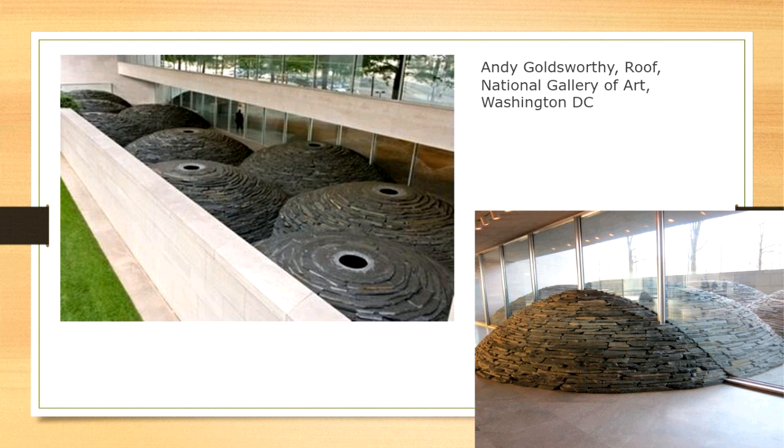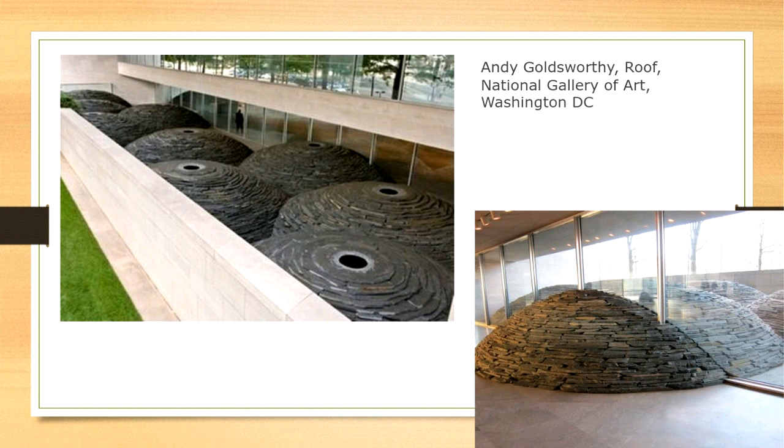This is Andy Goldsworthy's roof sculpture, which is actually right downtown at the National Gallery of Art. The cool thing about that sculpture is that when you walk into the gallery, some of it seems to be on the inside of the building and some of it seems to be on the outside. So what do you think — is there a big hole cut in the glass for the sculpture to fit through, or is there some other way they've made it look that way?